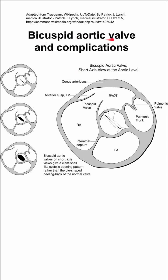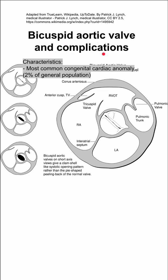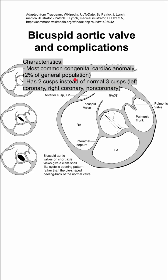Here are some notes on the bicuspid aortic valve and some associated complications. The bicuspid aortic valve is the most common congenital cardiac anomaly, and it's present in about 2% of the general population.